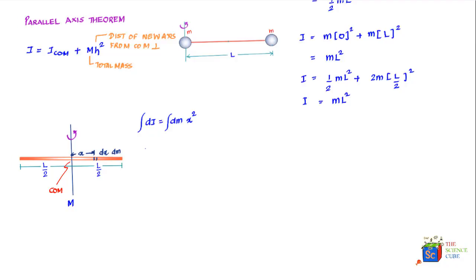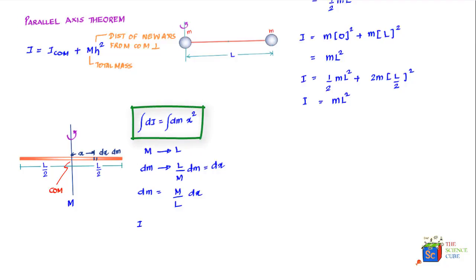If the total mass of the rod is m and its total length is l, then dm corresponds to length (l/m)·dm = dx, which gives dm = (m/l)·dx. Substituting this into our expression, we get dI = (m/l)·x²·dx.